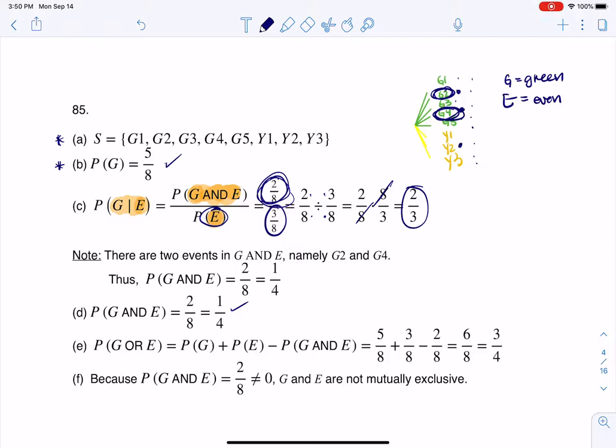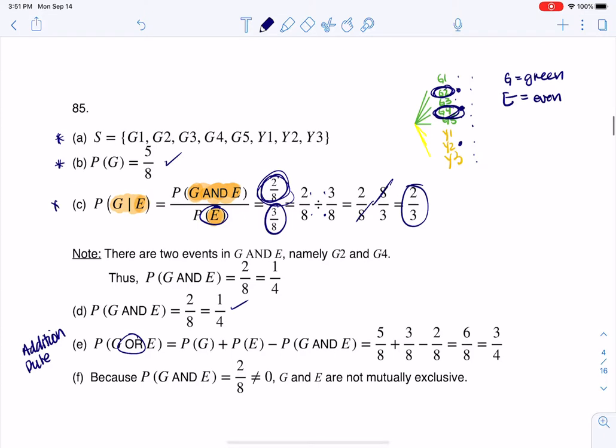And then part E asks us for the OR formula. Well, that is the addition rule. That is formula 1 in those five formulas you have. It's one of the formulas that you're always allowed to use. This was formula 2 up here. You're always allowed to use it.